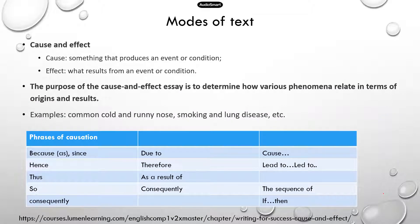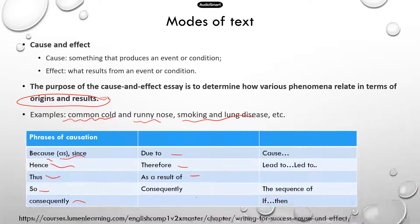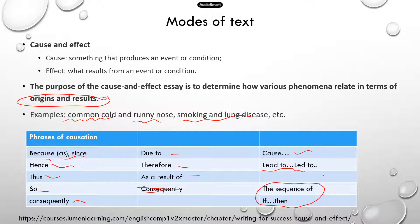For cause and effect — something produces an event or condition, a result. Examples of cause and effect passages include a common cold causing a runny nose, or smoking and lung disease. Words and phrases that indicate causation include: because, since, hence, so, consequently, due to, therefore, as a result of, cause, lead to, and the sequence 'if...then.' The phrases 'as a result of' and 'if...then' come specifically from the official TEAS study manual, added to a table from Luma Learning.